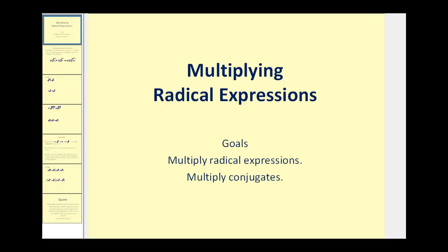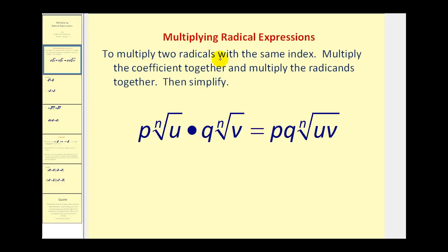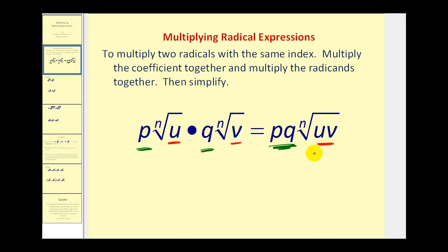Welcome to a video on multiplying radical expressions. To multiply two radicals with the same index, multiply the coefficients together and multiply the radicands together, and then simplify. As you can see here, we have p and q outside the radicals — those are the coefficients — so we multiply those together. And we have u and v as our radicands, the numbers or expressions underneath the radicals. We multiply those together and they stay underneath the radical, and then we simplify if we can.